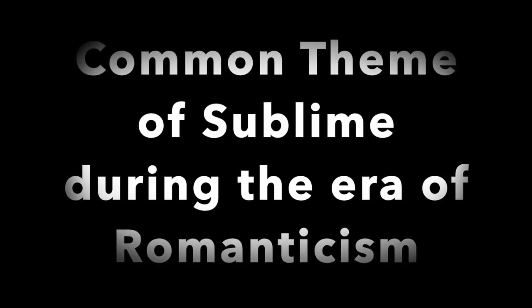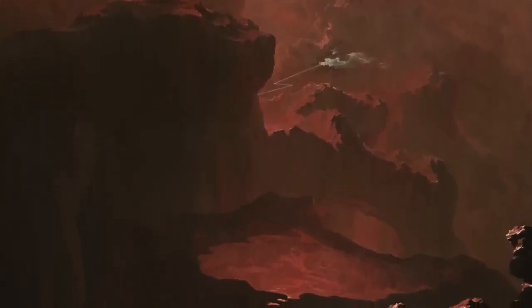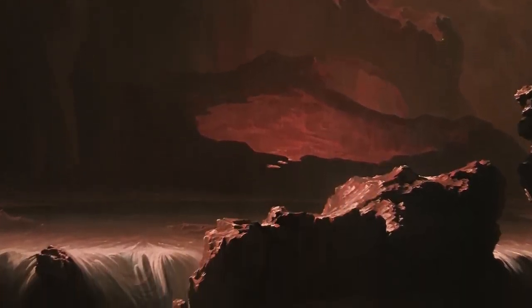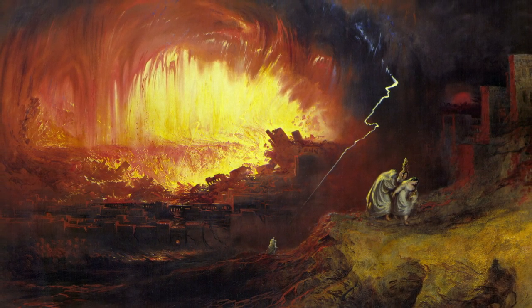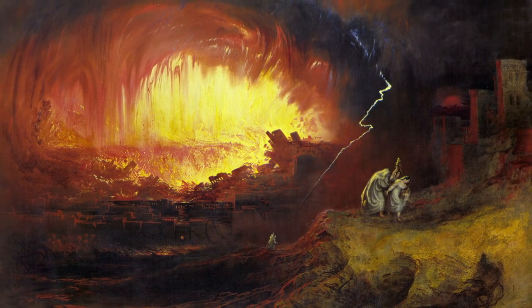John Martin created a common theme of sublime during the era of Romanticism. He incorporated specific meanings behind each and every one of his paintings. His pattern of using different elements such as contrast and dark tones creates symbolism within his work. It's very fascinating how he dispenses such terror yet satisfaction in his art style.